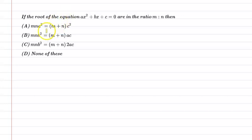Hello students, let us understand the following question. In this question, the question says, if the root of the equation ax square plus bx plus c equal to 0 are in the ratio m is to n, then according to the options a, b, c, d, we have to pick which option will be the correct option.